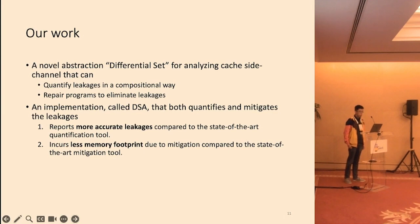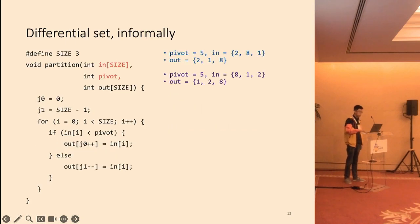In this work, we propose a novel abstraction differential set for analyzing cache side channels. It can be used to both quantify and mitigate leakage. We build implementation DSA, which performs better than the baseline in both tasks. In the next few slides, I will informally explain what differential set is. We will use the running example on the left throughout the presentation. The program partitions the input array using the other input pivot and stores the result in the out array. It is very similar to the one used in Quicksort.